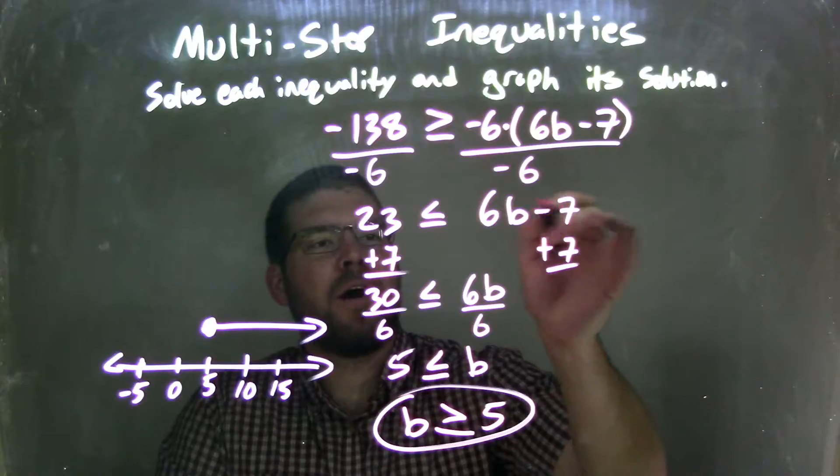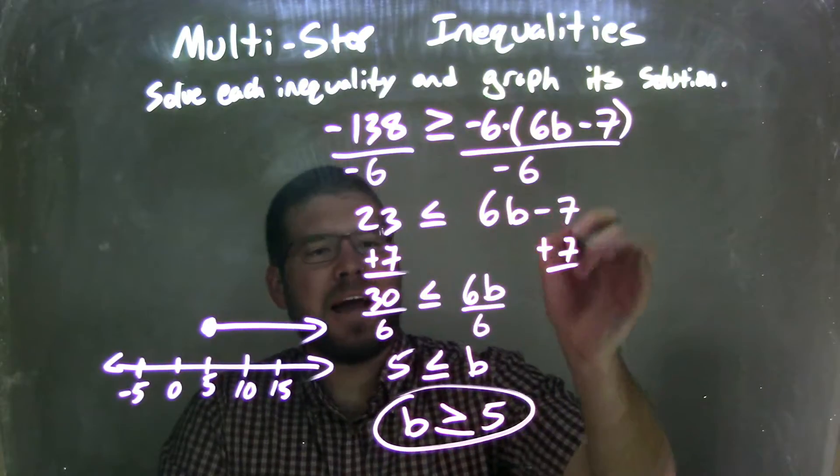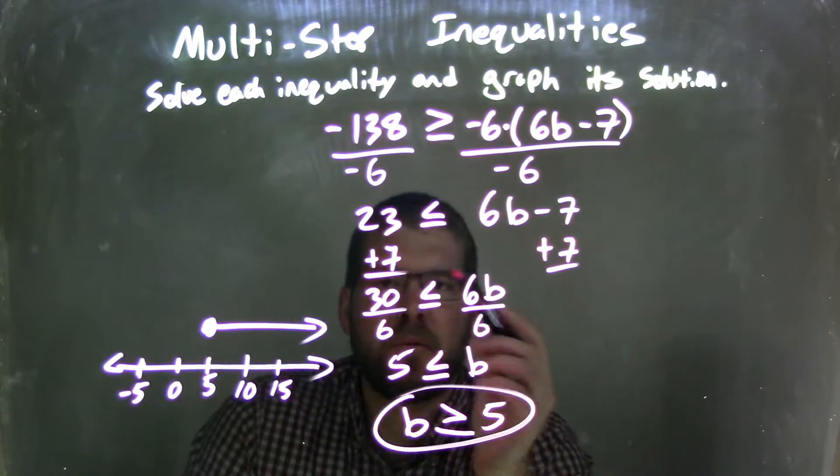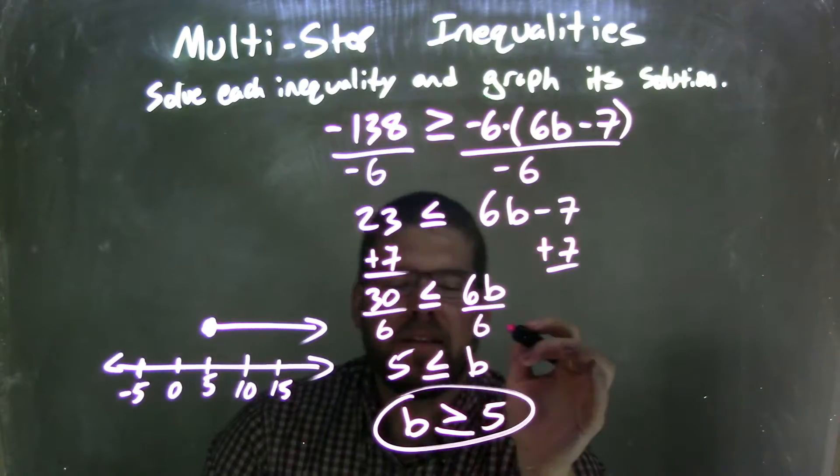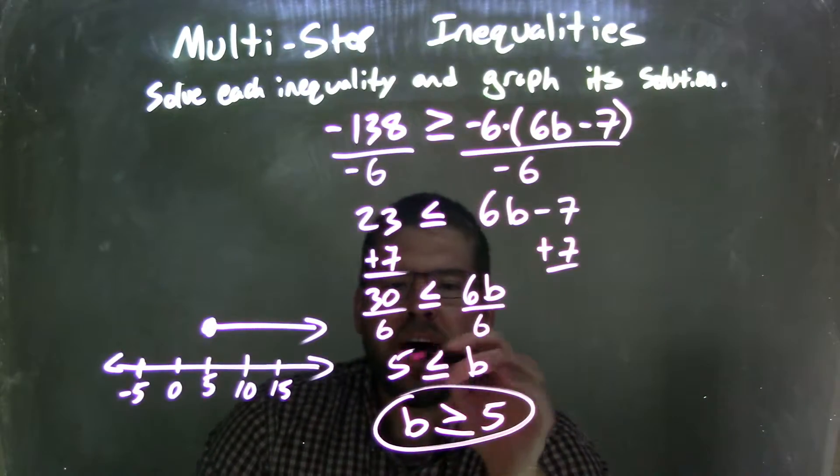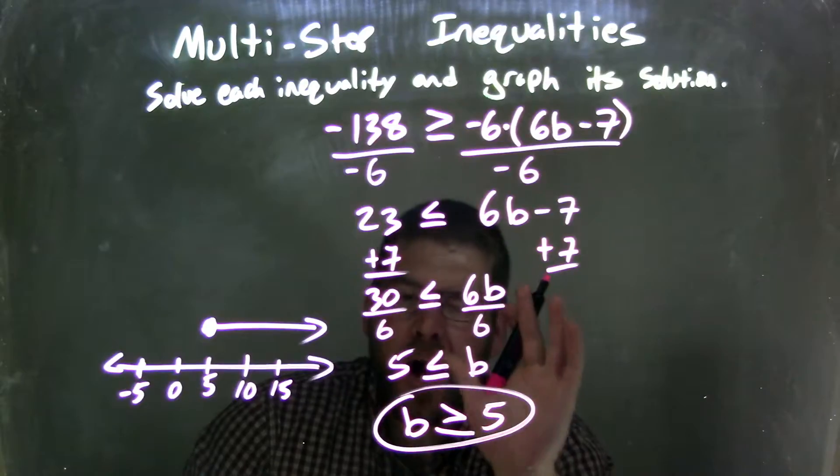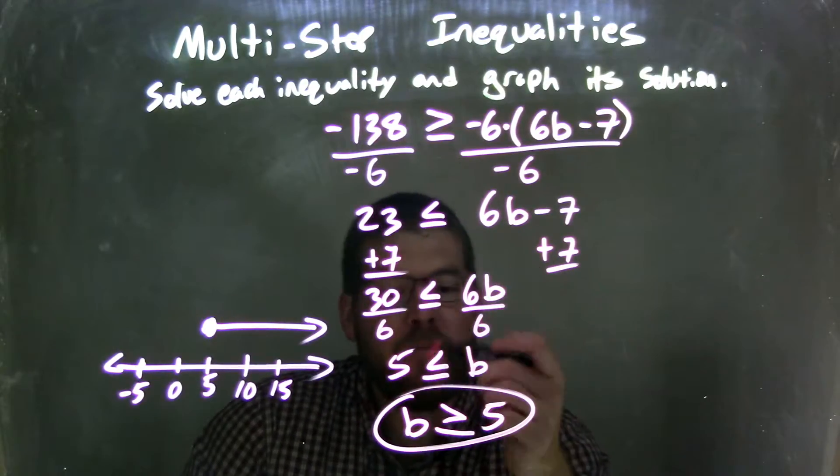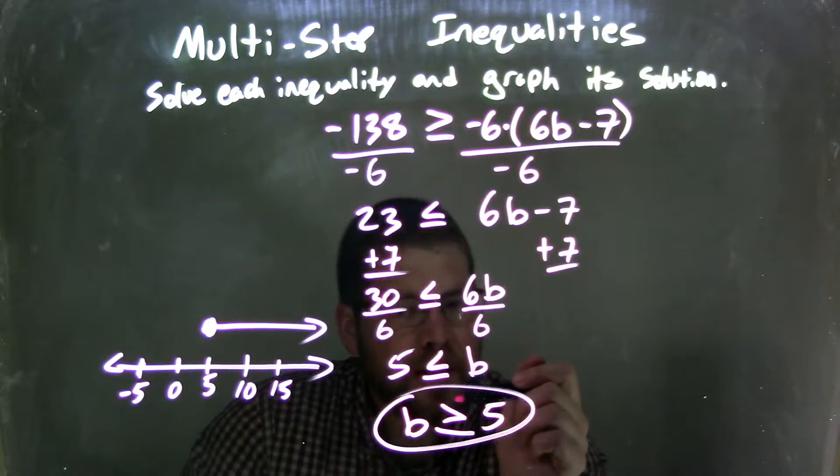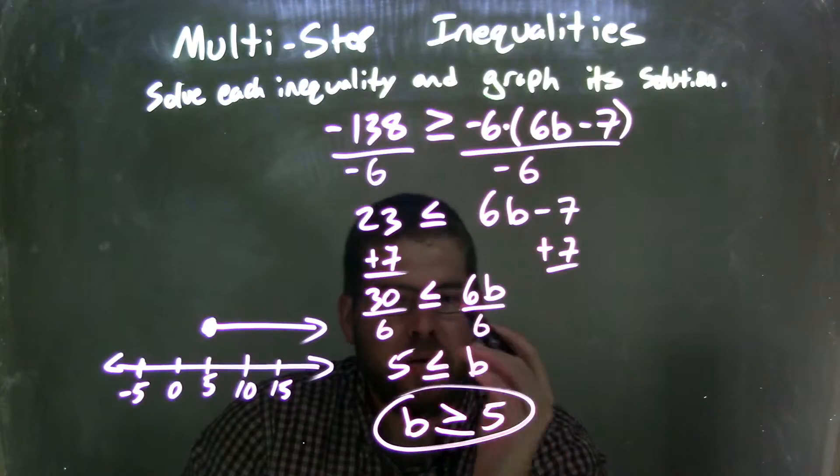And then from here, I was left with 6b minus 7. I added 7 to both sides, giving me 6b on the right and 30 on the left. I then divided by 6 to both sides, giving me b by itself. So I had 5 is less than or equal to b. I want to rewrite this, make it look nice and neat. So I had b come first. So b now is greater than or equal to 5. Make sure we flip the inequality when we do that.